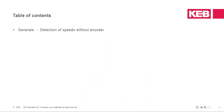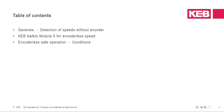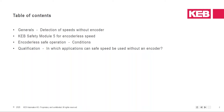So what we will discuss: general detecting of speed without encoder; KEB safety module five with encoderless speed — this is the hardware which can handle this; encoderless safe operation conditions; qualification — in which applications can safe speed be used without an encoder; and at last, safe door lock control, a special function I will explain at the end.